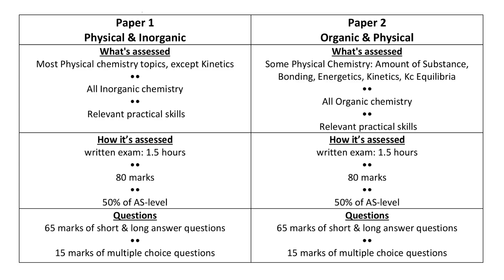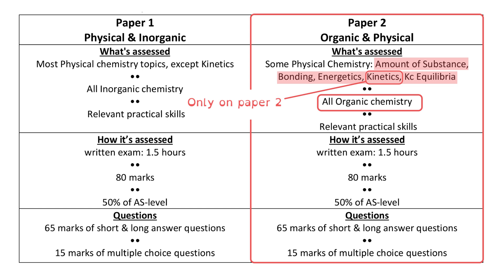Before prioritizing your revision it's important to know which topics can be assessed. Paper 2 is Organic and Physical Chemistry and as such all organic chemistry can be assessed. Of the Physical Chemistry there are five topics: Amount of Substance, Bonding, Energetics, Kinetics and KC Equilibria and some of those are in fact only assessed on Paper 2.